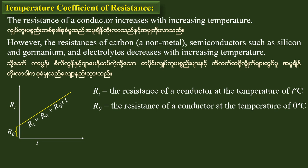This is the straight line equation. Rt is equal to R0 plus R0 alpha t. So we have to write Rt is equal to R0 into 1 plus alpha t.